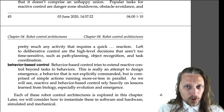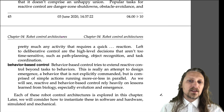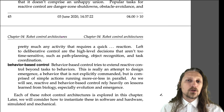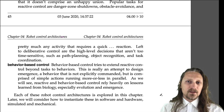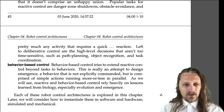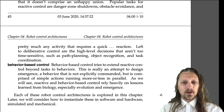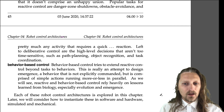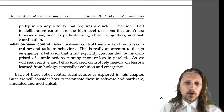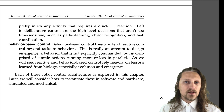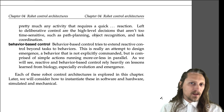Finally, behavior-based control. Behavior-based control tries to extend reactive control beyond tasks to behaviors — more complex than tasks. This is really an attempt to design emergence: a behavior that is not explicitly commanded, but is comprised of simple actions running more or less in parallel. As we will see, reactive and behavior-based control rely heavily on lessons learned from biology, especially evolution and emergence. Each of these robot control architectures is explored in this chapter. Later, we will consider how to instantiate these in software and hardware, simulated and mechanical.